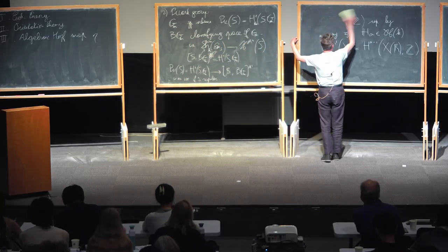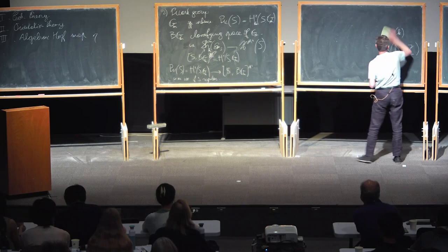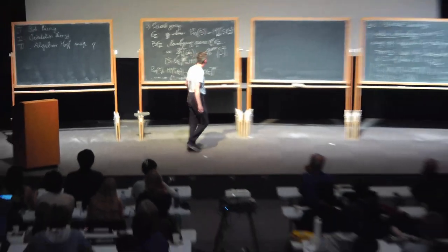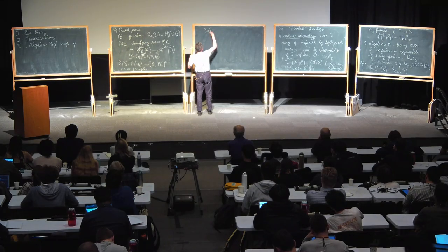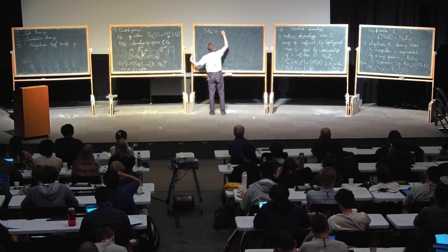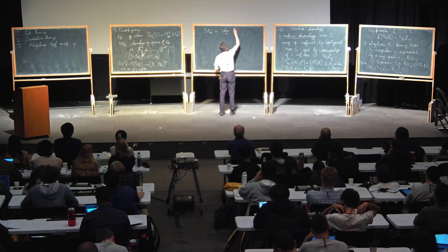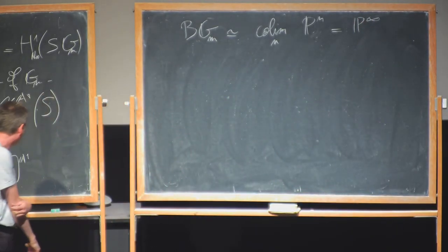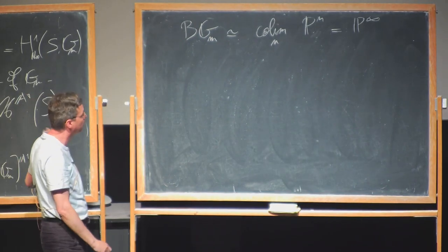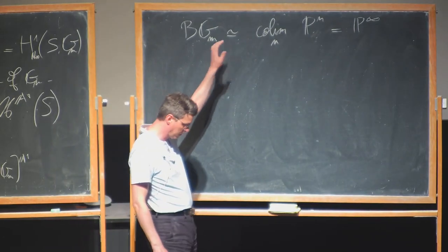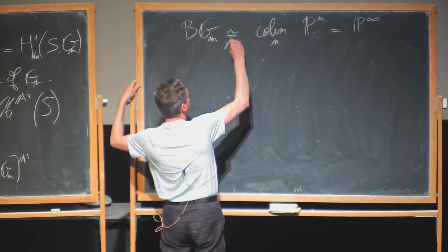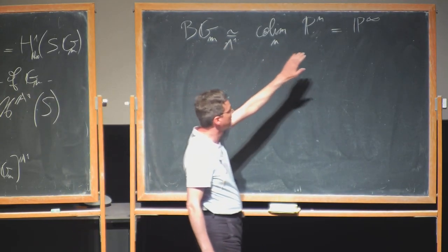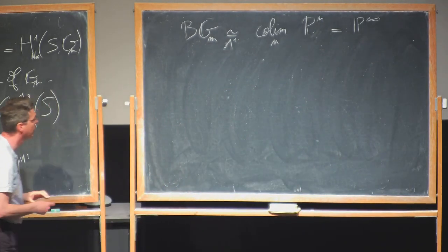There is a theory from the book of Morel and Voevodsky: one can compute BGm as the colimit over n of P^n, which is P-infinity. This colimit is taken in the category of sheaves or the infinity category. So BGm is actually represented by P-infinity, which is a particular case of a Grassmannian.